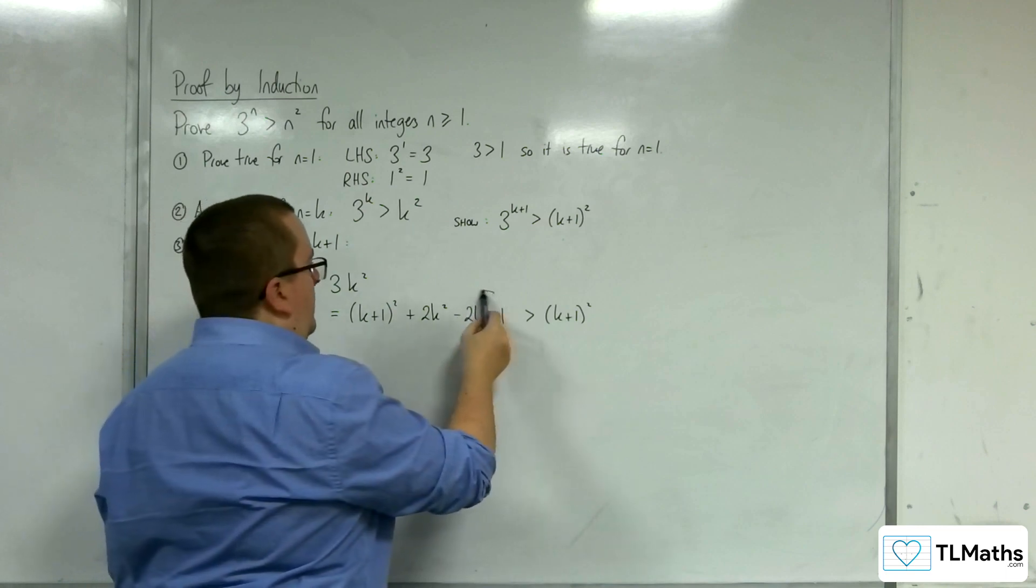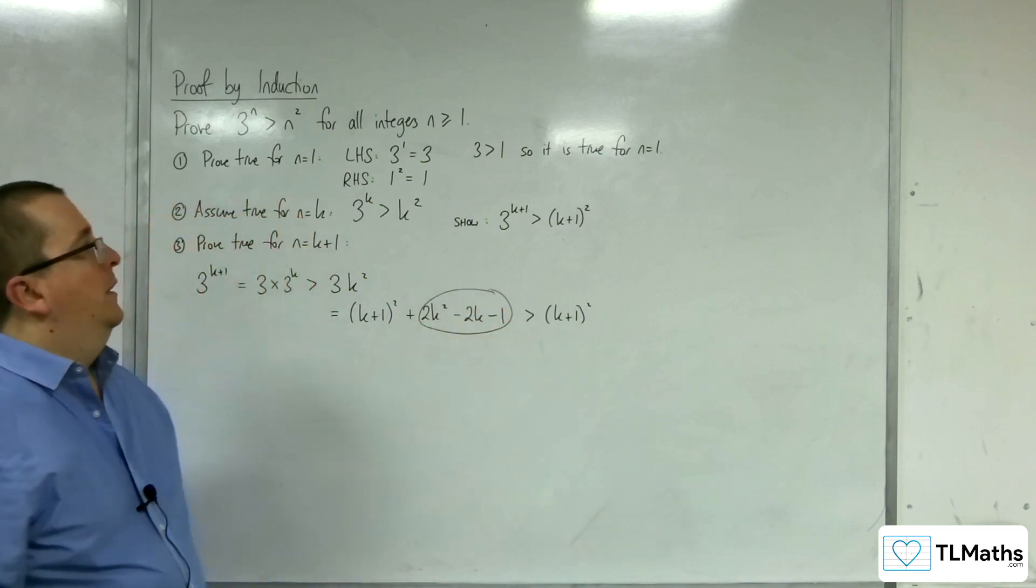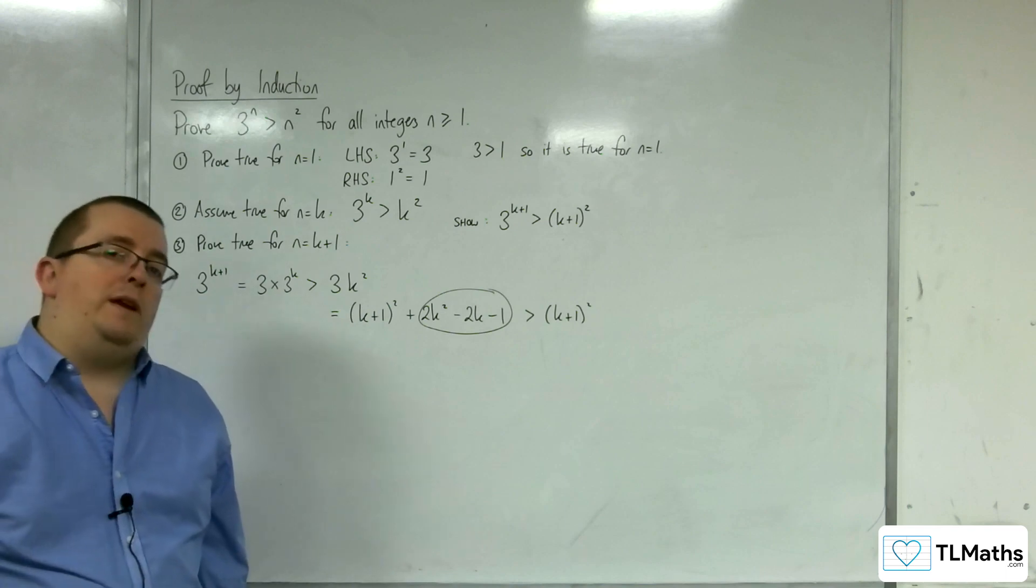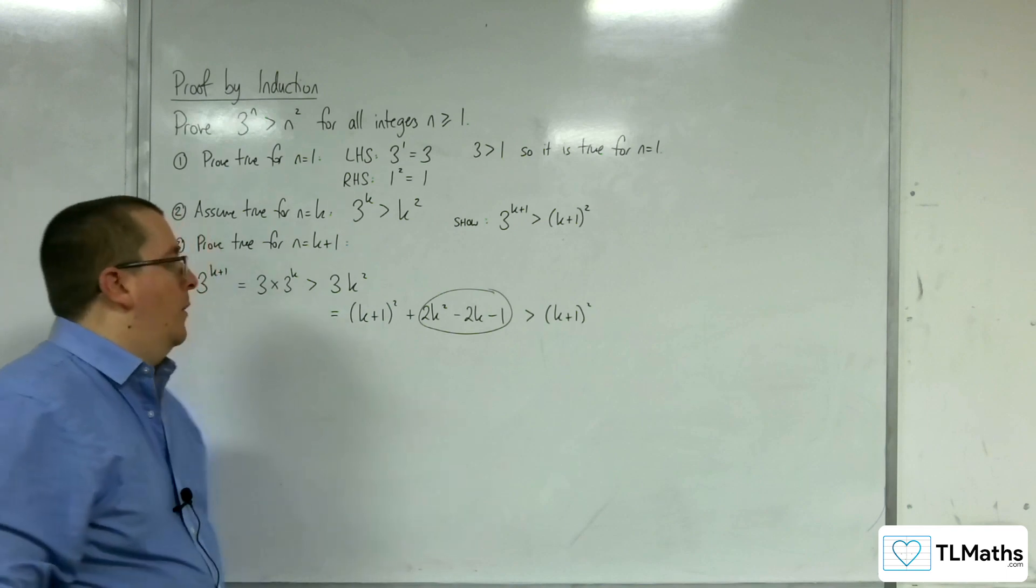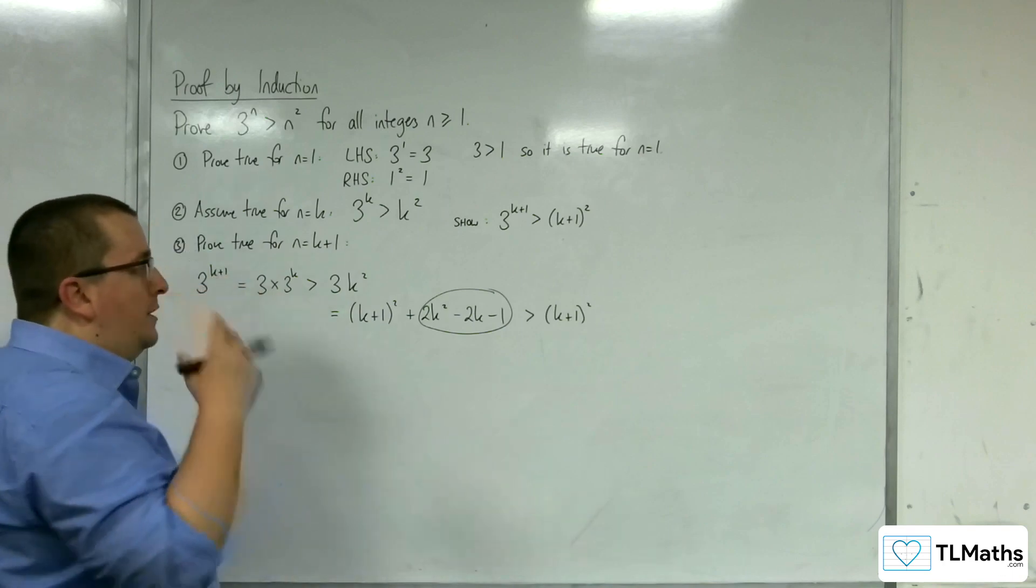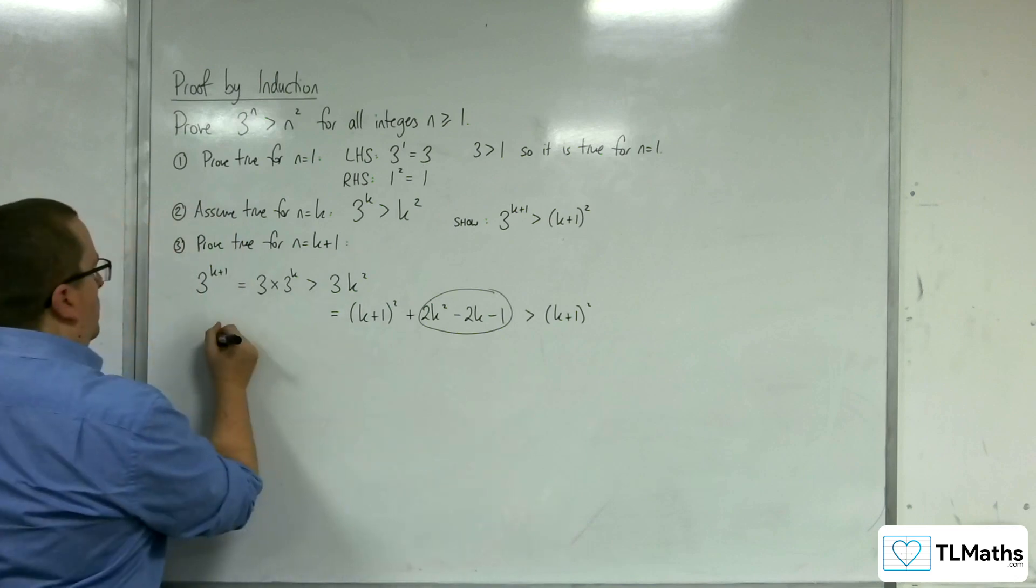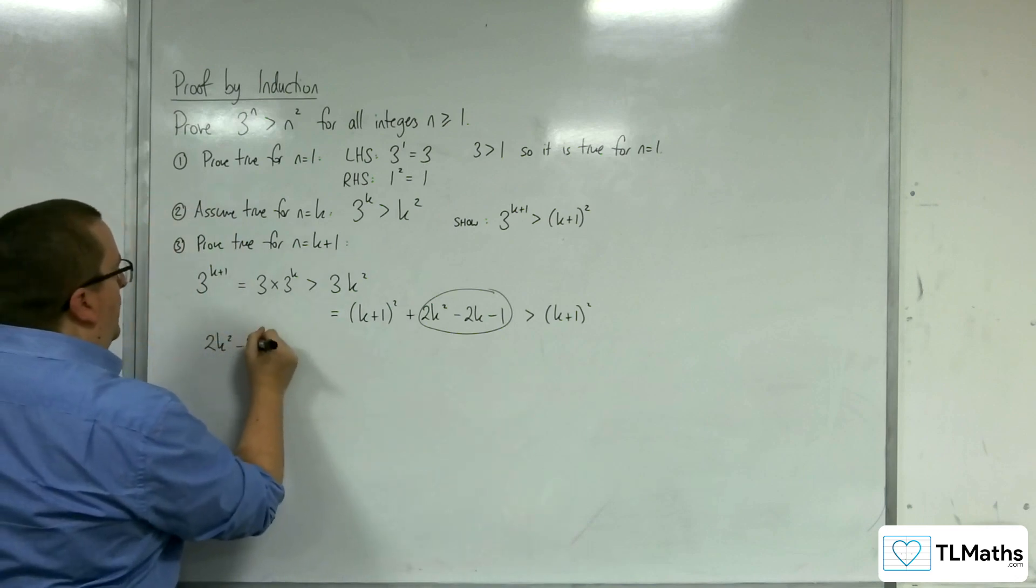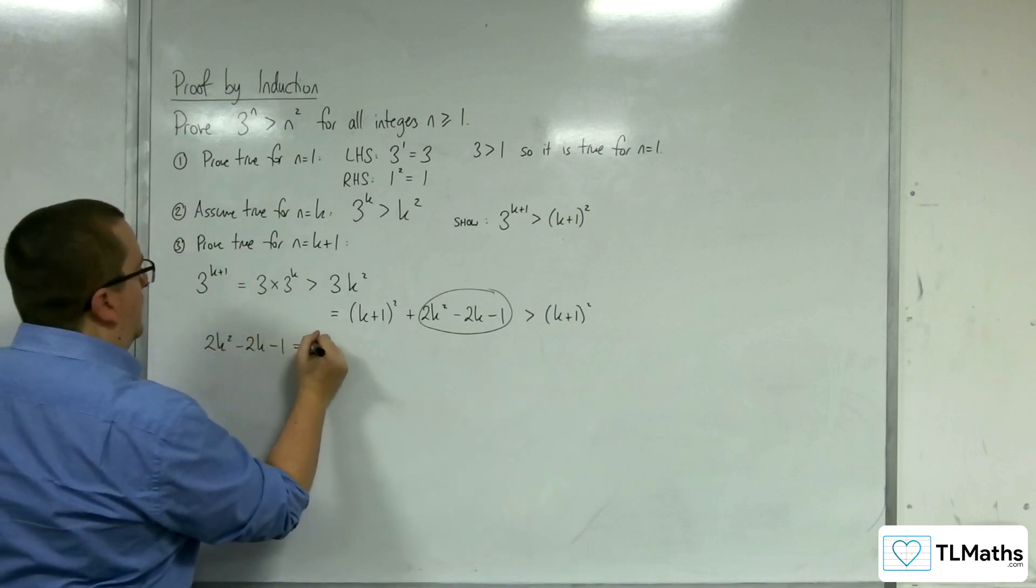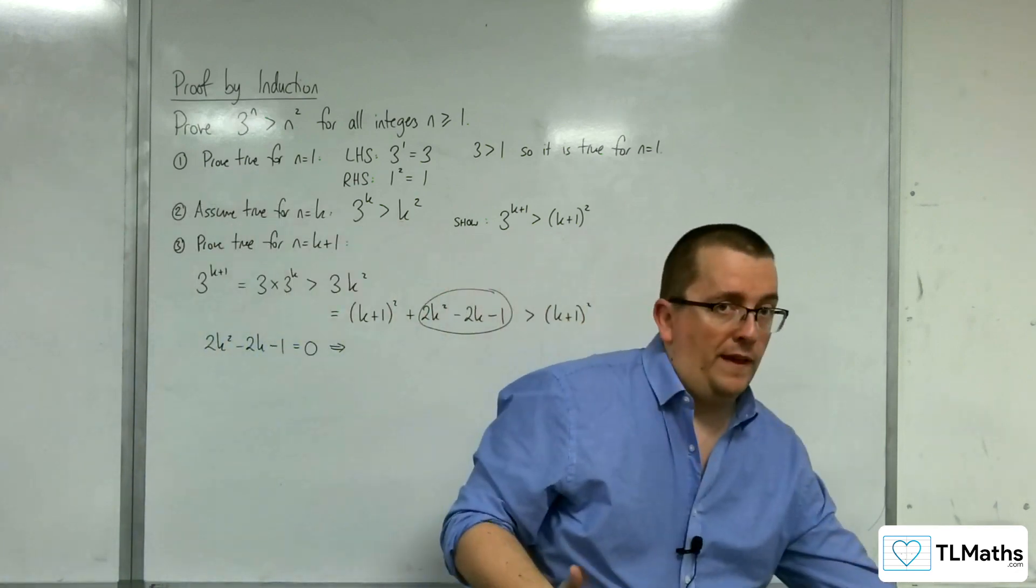In order to do that, I need to show that that is greater than 0 for all n greater than or equal to 1. So how can I do that? Well, 2k squared minus 2k minus 1. If I look at when it's equal to 0, I can solve that on my calculator.